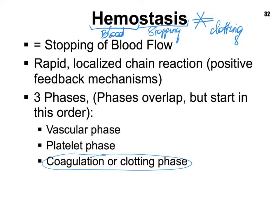Hemostasis consists of three phases that occur in this order. First, there is the so-called vascular phase, followed by the platelet phase, and then clotting. Notice that clotting is part of hemostasis, but hemostasis has two additional phases that occur.